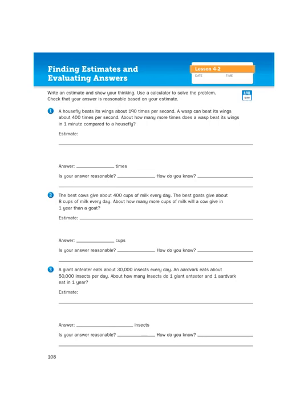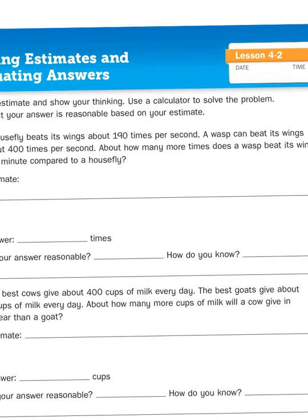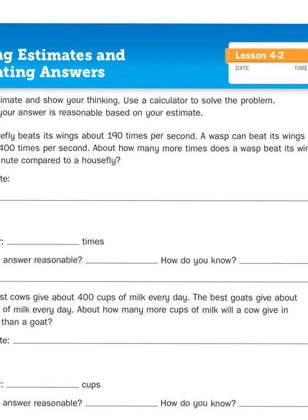Let's read the instructions, because they're rather unique. Write an estimate and show your thinking. Well, that's not necessarily new. We've been asked to show our thinking quite a bit. But this next line here, that's a little unique. It says, use a calculator to solve the problem. As we are building up to learning how to multiply large-digit numbers, I wouldn't count on seeing the instructions to use a calculator beyond this lesson.